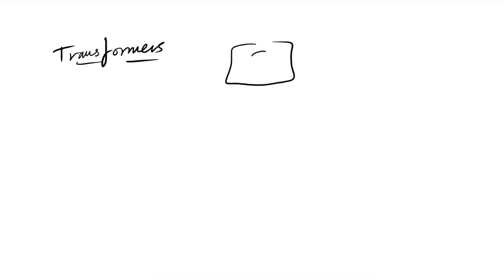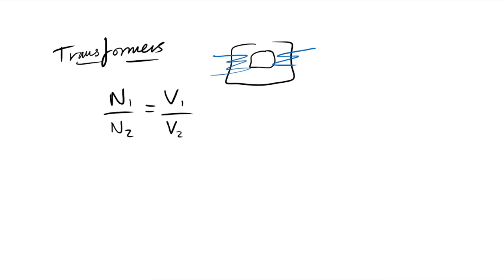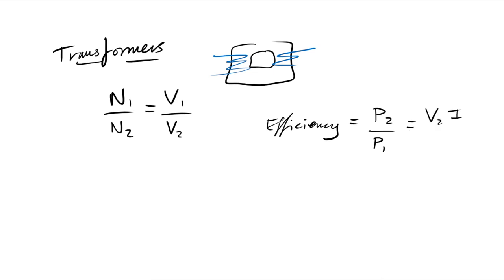For transformers, the turns ratio equals the voltage ratio: N_s/N_p = V_s/V_p. For efficiency, power out divided by power in: (V_sI_s)/(V_pI_p). For an ideal 100% efficient transformer, V_pI_p = V_sI_s.